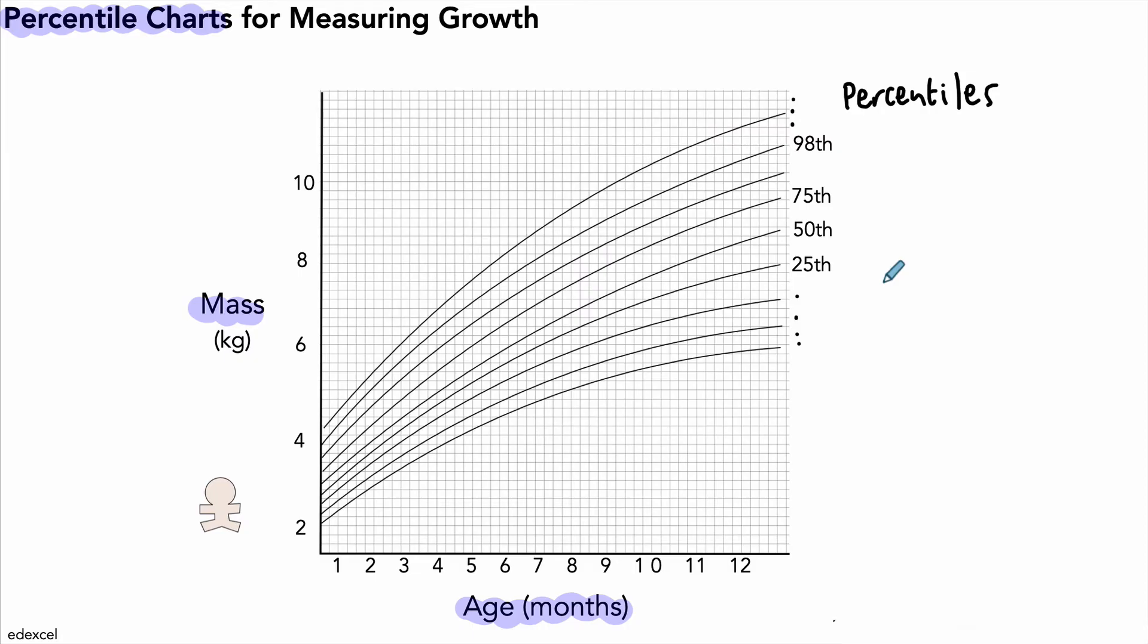So how do we actually use a percentile chart? Imagine we have a baby at age 8 months and a mass of 6.8 kg. Firstly, where does this baby appear on this chart? We can look at the value of 8 months and draw a line up, then go to 6.8 kg and draw a line across. We can see that the line falls at this point marked in red, and that is on the 50th percentile.